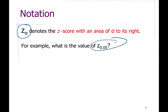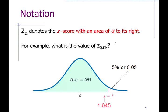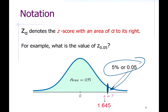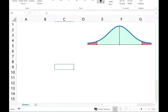Let's calculate z sub 0.05 — that means the z-score that separates the top five percent of the area. I'm using the normal distribution model here. It turns out the z-score that separates the top five percent is 1.645. You can use Excel to calculate this, or basically any value — it doesn't have to be 0.05. Let me bounce over to Excel: z sub 0.05 means this red shaded area is 0.05.